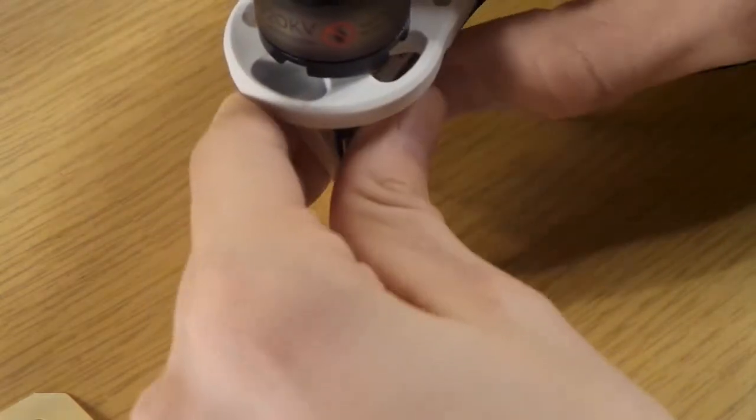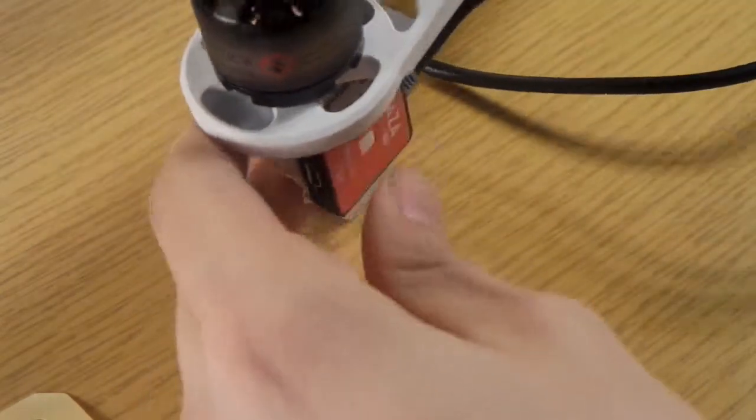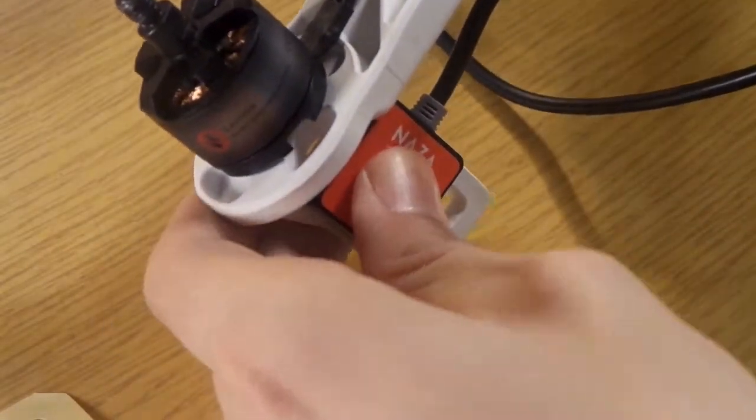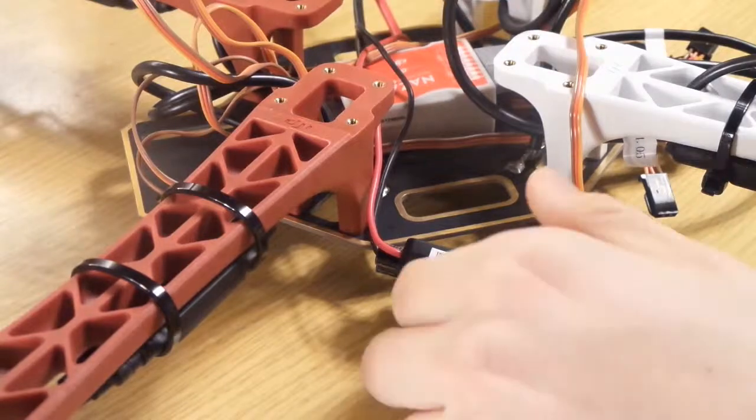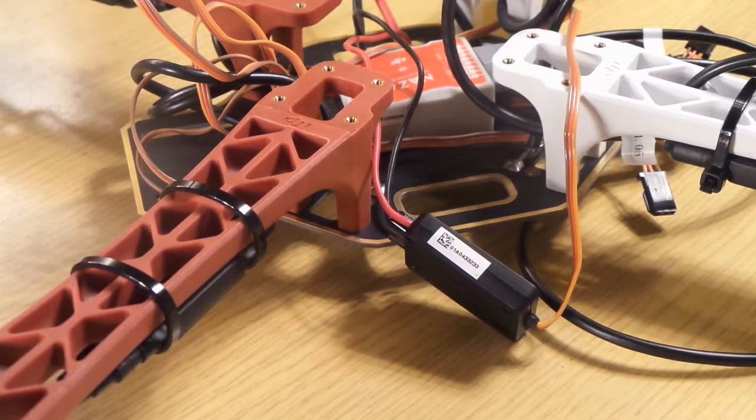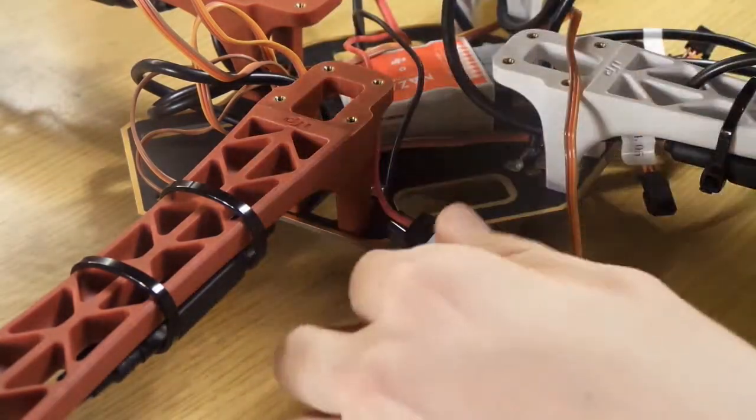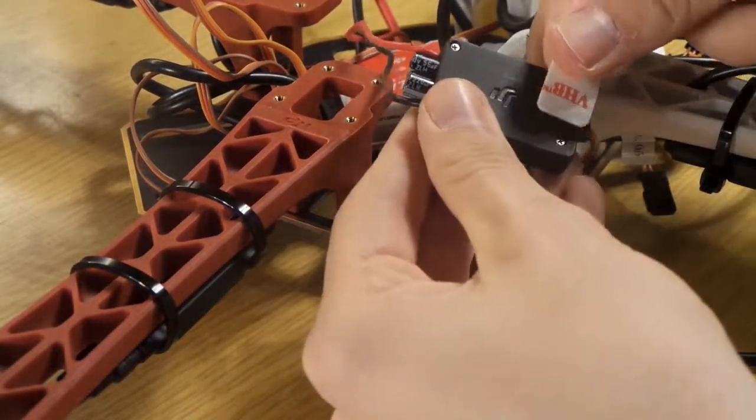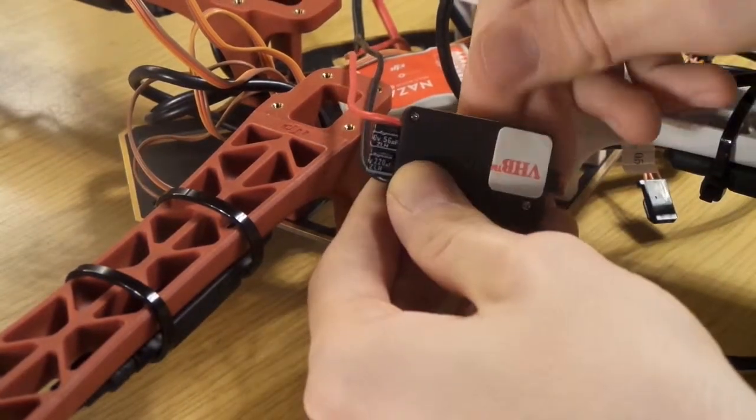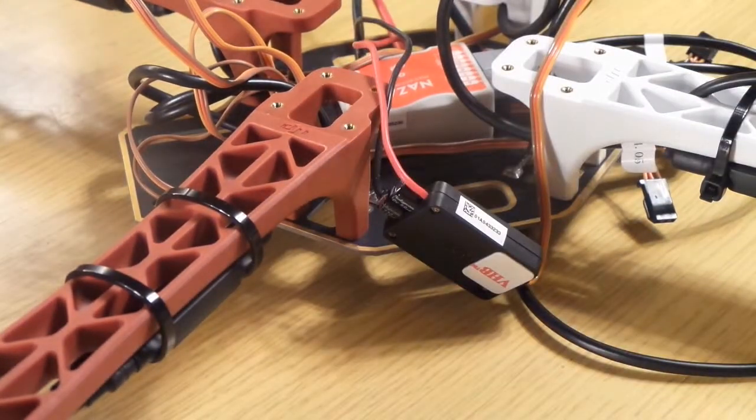Next we're going to take the power unit and also stick this onto the quad. We're going to take the stickers and then we have to find some free space for this PMU. I took this place, you can do it wherever you want.